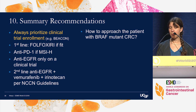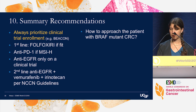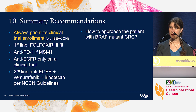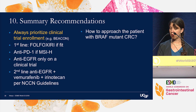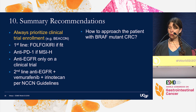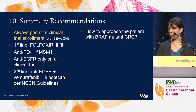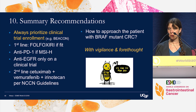In summary, I recommend always prioritizing clinical trial enrollment whenever feasible. I use first-line FOLFOXIRI with bevacizumab in fit patients. I use anti-PD-1 checkpoint inhibitor therapies in patients with microsatellite-unstable BRAF-mutated tumors. I avoid BRAF inhibitor monotherapy and only use anti-EGFR antibodies on a clinical trial or in the second line with vemurafenib and irinotecan per the NCCN guidelines. In response to the question of how to approach the patient with a BRAF mutant colorectal cancer: with vigilance and forethought, because caring for these patients often requires moving very swiftly to Plan B.